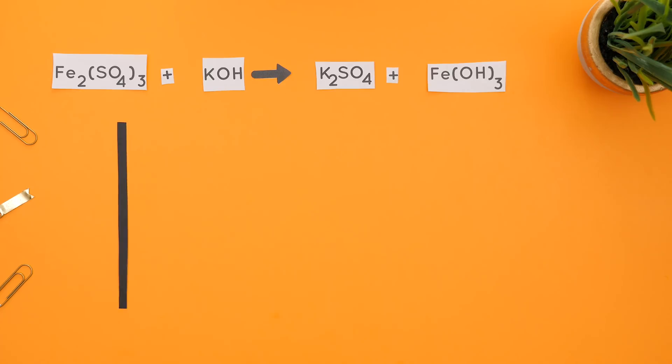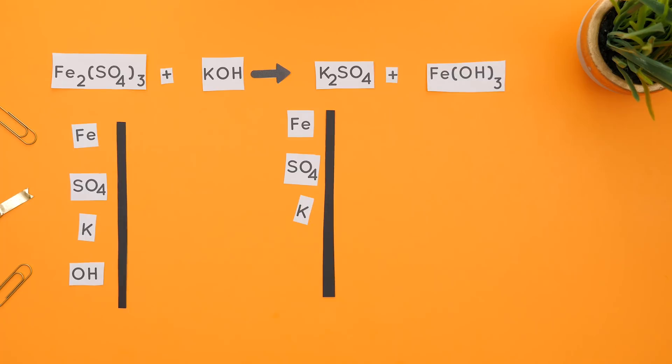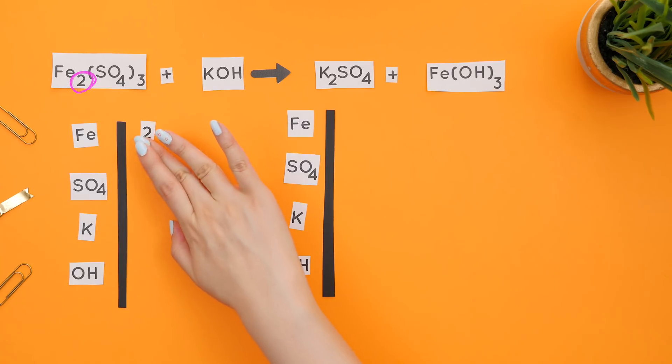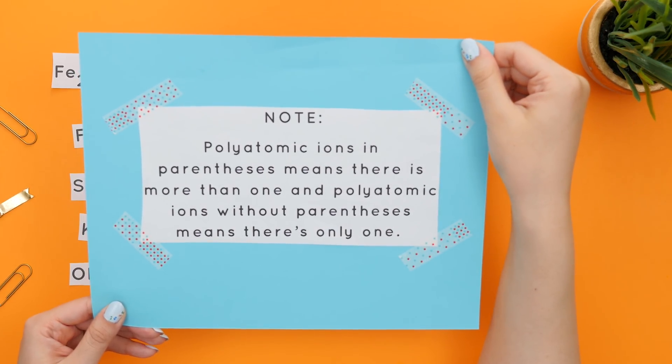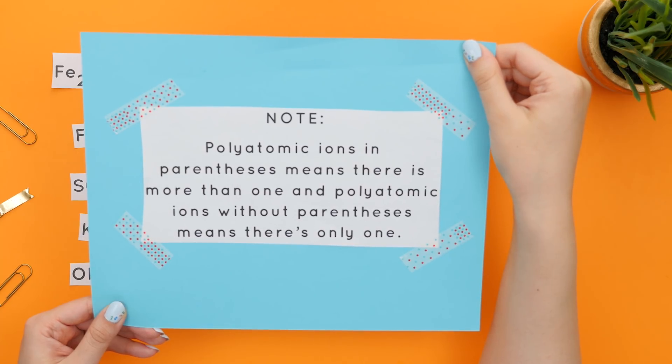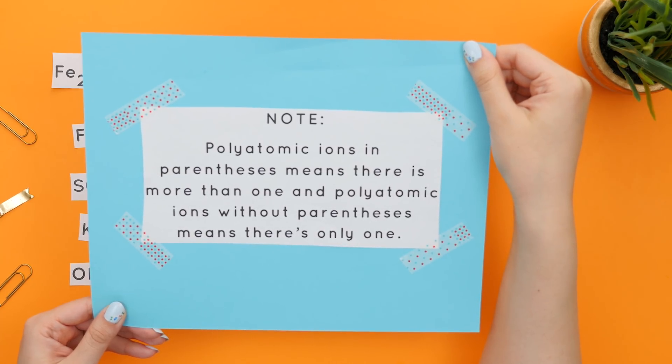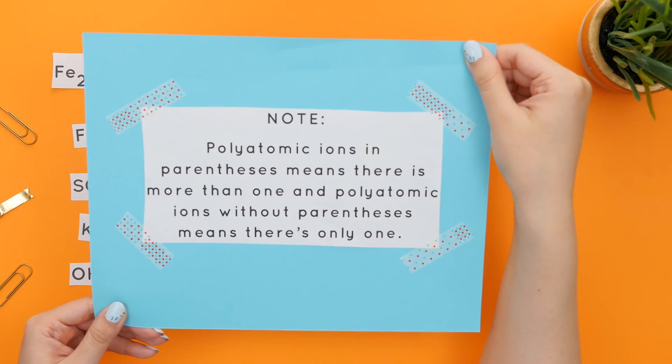Let's list all the single elements and polyatomic ions on each side in the same order to make balancing easier. Now we'll count how many of each element or polyatomic ion there is on either side. Iron has a subscript of two, so there are two irons. Note, polyatomic ions in parentheses means there is more than one, and polyatomic ions without parentheses means there's only one.